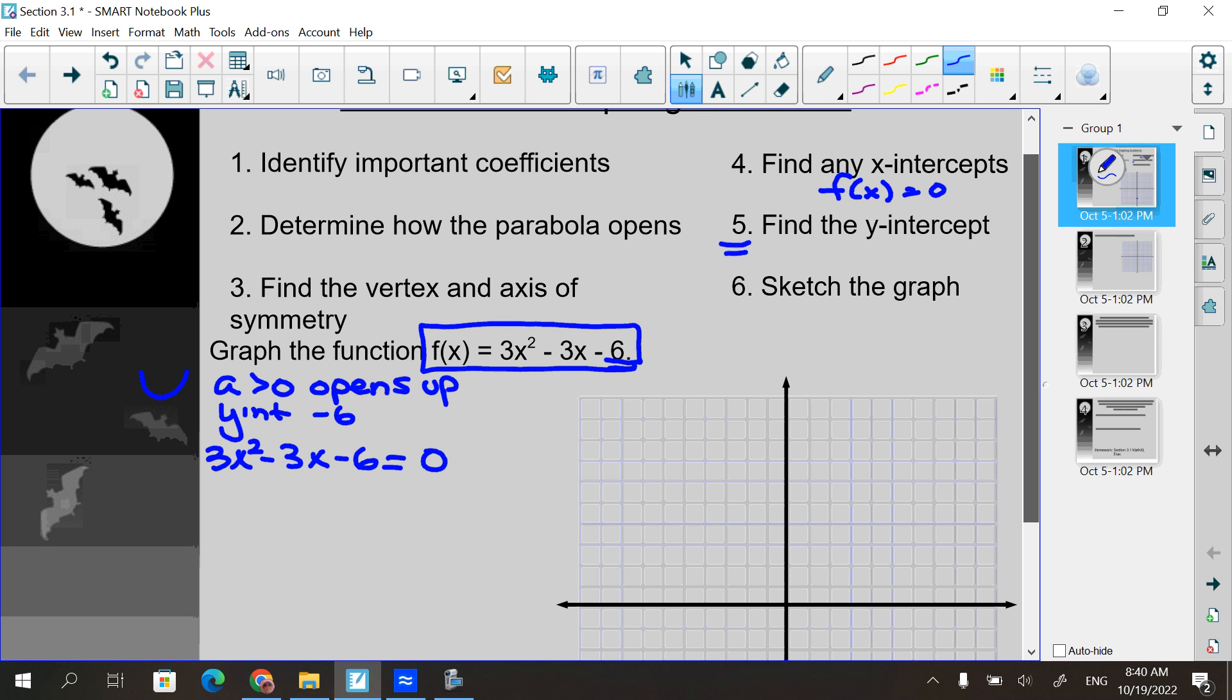Again, you did this last year. You did it in algebra one as well. Here to factor it, it looks like I can factor a three out, which would be x squared minus x minus two. And then that factors even further as x minus two and x plus one. And when I set them each equal to zero, it's x equals two and x equals negative one. These are the x-intercepts.